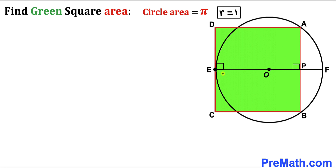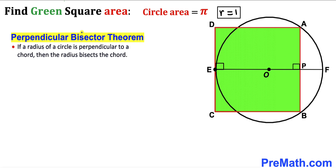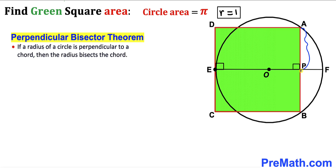Next, we draw diameter EF passing through center O. By the circle theorem, the angle between the radius and the tangent is 90 degrees. Applying the perpendicular bisector theorem, since radius OF is perpendicular to chord AB at point P, segment AP equals segment BP — the chord is bisected into two equal parts.